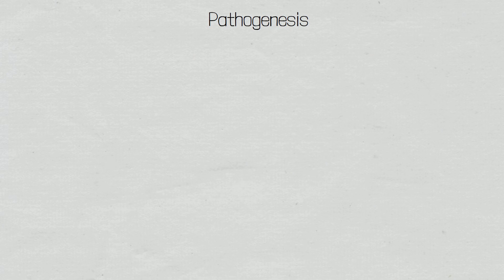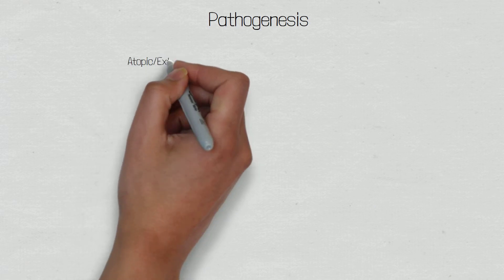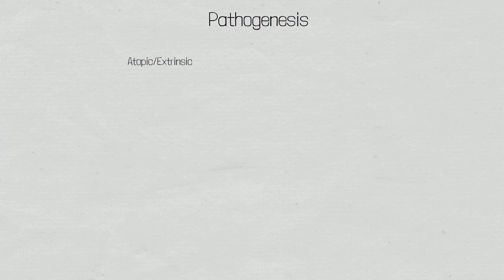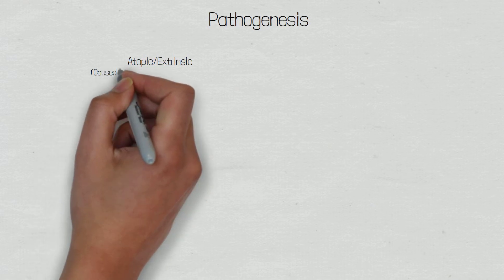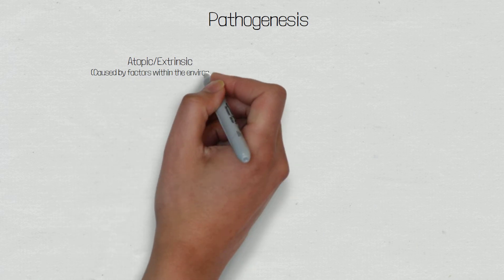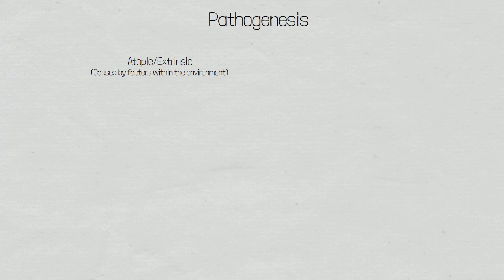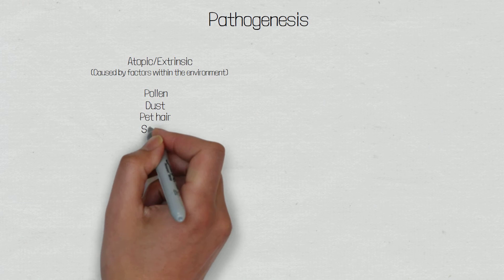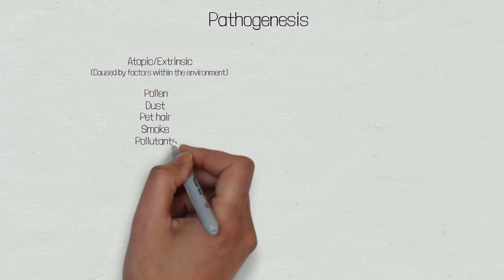Asthma can be divided into two categories, based on what triggers the individual's attacks. Atopic, or extrinsic asthma, is caused by a hypersensitivity reaction to normal particles, which, ordinarily, would not initiate an immune response. It is called extrinsic because the patient needs to be exposed to factors in the environment. Most commonly, these include triggers such as pollen, dust, pet hair, smoke, pollutants, and medications.